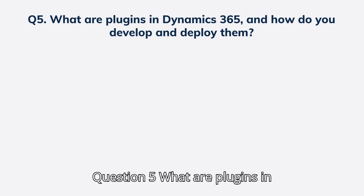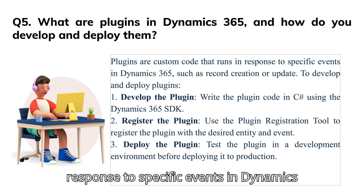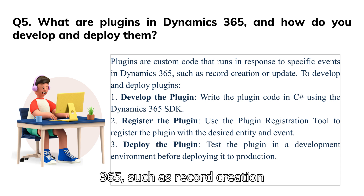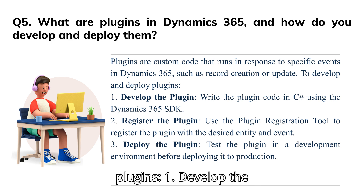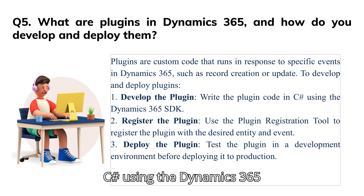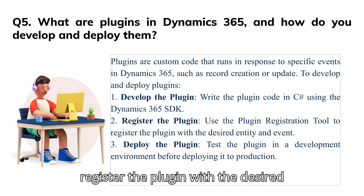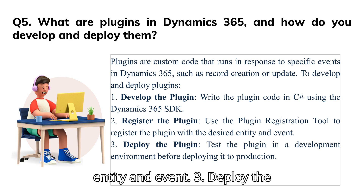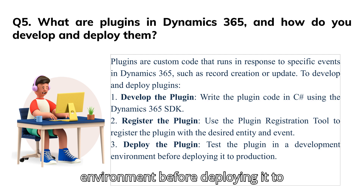Question 5: What are plugins in Dynamics 365 and how do you develop and deploy them? Plugins are custom code that runs in response to specific events in Dynamics 365, such as record creation or update. To develop and deploy plugins: 1. Develop the plugin — write the plugin code in C# using the Dynamics 365 SDK. 2. Register the plugin — use the plugin registration tool to register it with the desired entity and event. 3. Deploy the plugin — test it in a development environment before deploying to production.